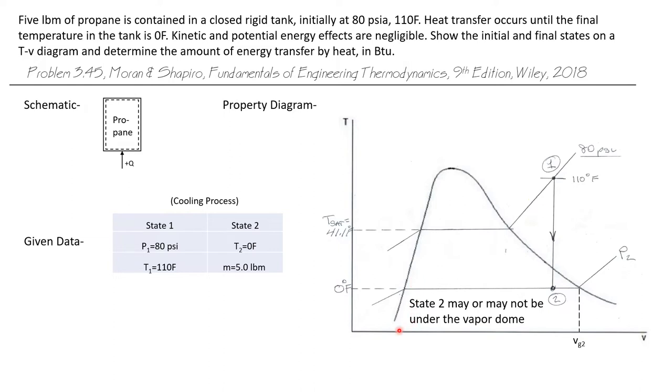Let's draw a TV diagram. We'll start with our vapor dome and let's lay in state one. Now state one is at 80 PSI and 110 degrees Fahrenheit. So let's draw an 80 PSI constant pressure line on this TV diagram. That would be this line right here. This is a constant pressure line at 80 PSI.